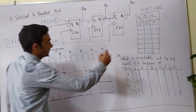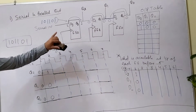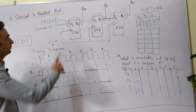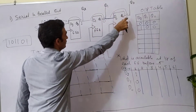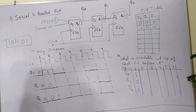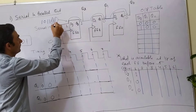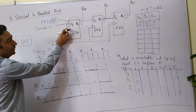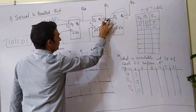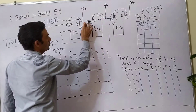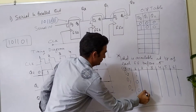Now let us put it in the output table. Next, what is the data available at the input of each flip-flop before the second clock edge? The 1 has reached Q2, the 0 has reached Q1, and the 0 has reached Q0. Now the new serial input 0 comes in, and because the flip-flops are interconnected, the values propagate: D2=0, D1=1, D0=0 before the second clock edge.